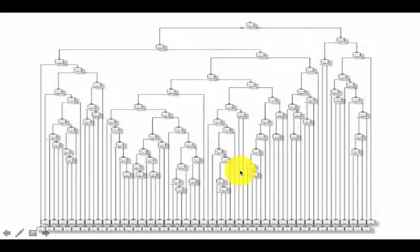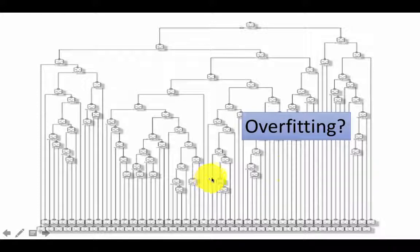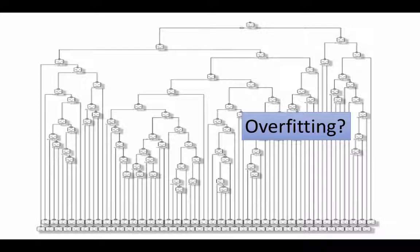If you carry this process to the end, you might get a very complicated tree, and this could indicate overfitting — building a tree too tailored to the training data. Any large dataset will have some aberrations, and if you build a very large tree you will try to identify rules even for those aberrations, which is not a great idea. This is called overfitting, which we've already seen with classification trees.